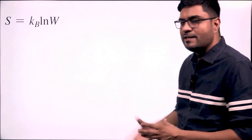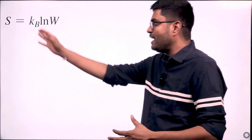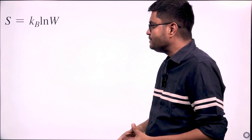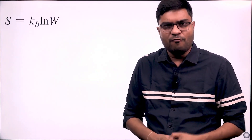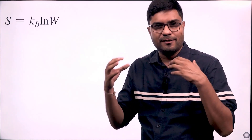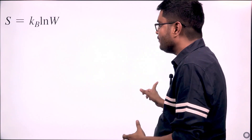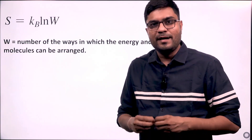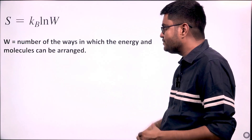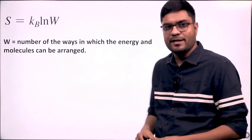The first question is: why does entropy decrease for the protein during folding? To understand that, we first have to understand the statistical definition of entropy, which gives us the formula S = Kb log W, where S is entropy, Kb is the Boltzmann constant, and W is a very interesting parameter for which we need a little bit of imagination. W is nothing but the number of ways in which the energy and molecules can be arranged.